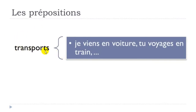The preposition 'en' is also used to express means of transport. For example, if you want to say 'I'm coming by car', in French you say 'je viens en voiture' — 'venir' is to come. Another example: 'tu voyages en train' — you travel by train. We also use 'en' for 'à pied' — on foot, 'en moto' — by motorbike, and 'en vélo' — by bicycle.